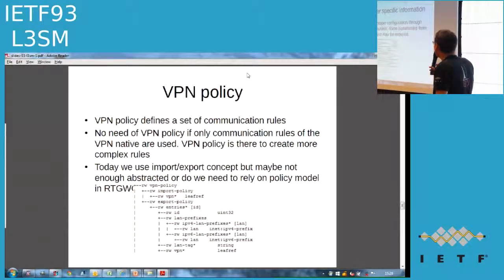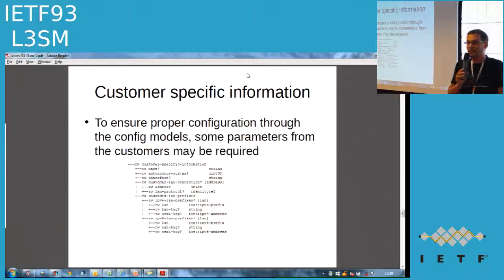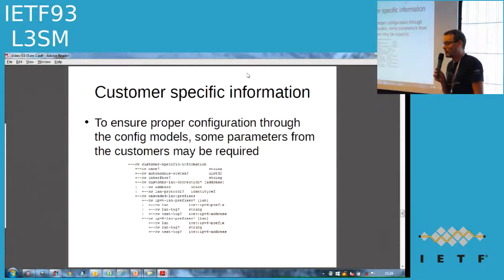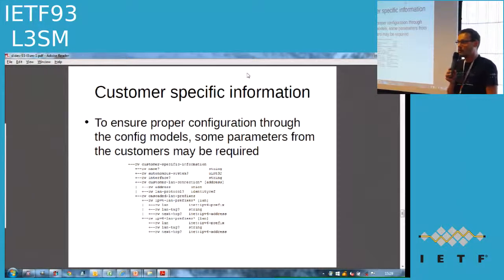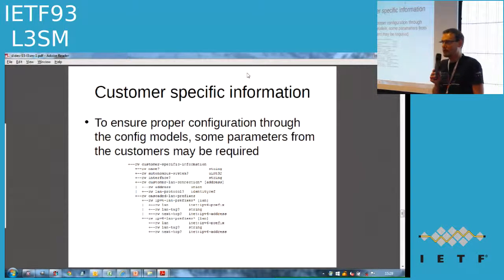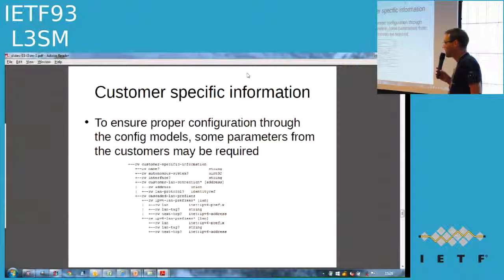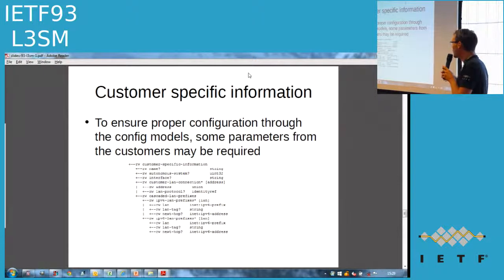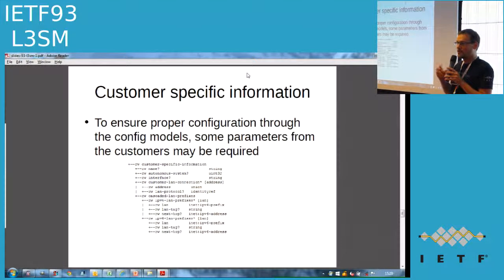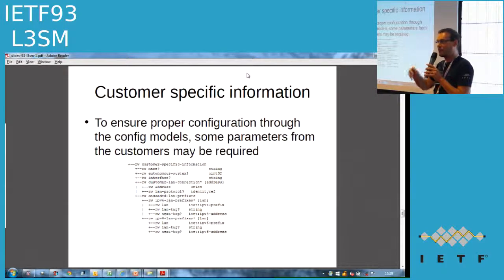We also need some customer-specific information. For example, if the customer requests a BGP session and wants to impose a specific AS number, we need to pass this to the orchestration. Also, if there are specific LANs connected to our network — sometimes LANs behind LANs, cascaded LANs — we need to be aware of this to perform the appropriate routing.